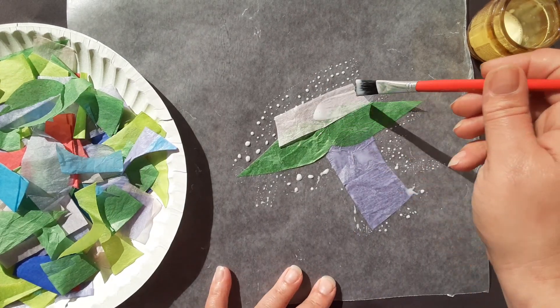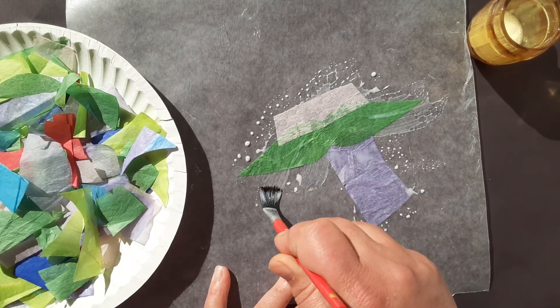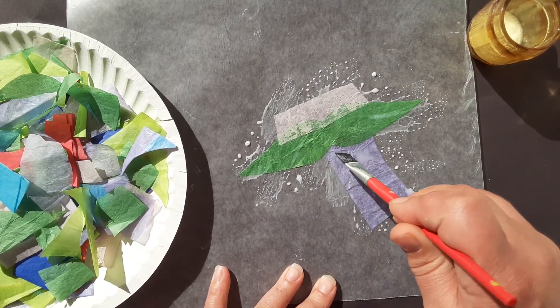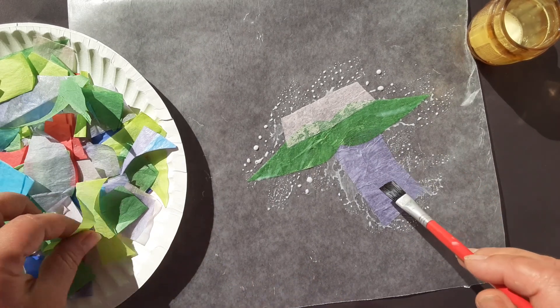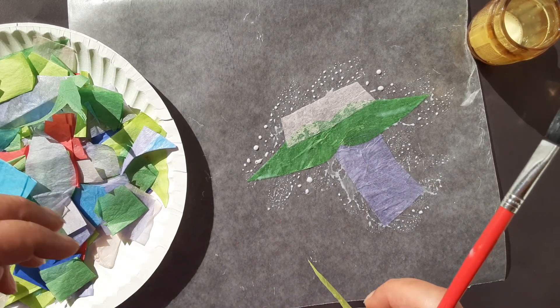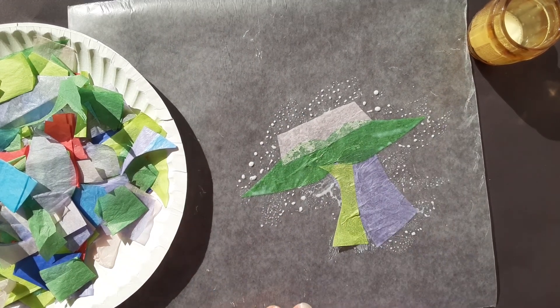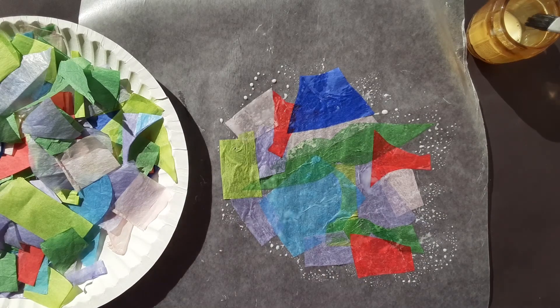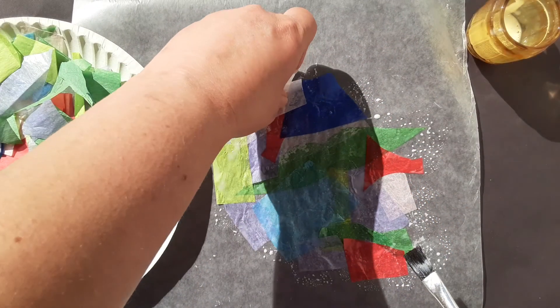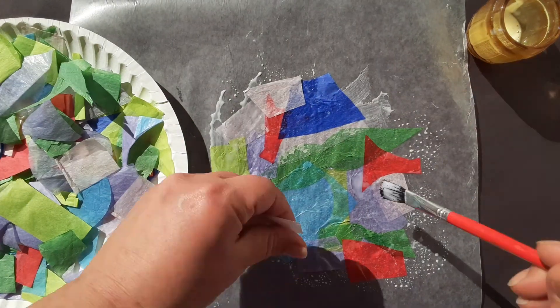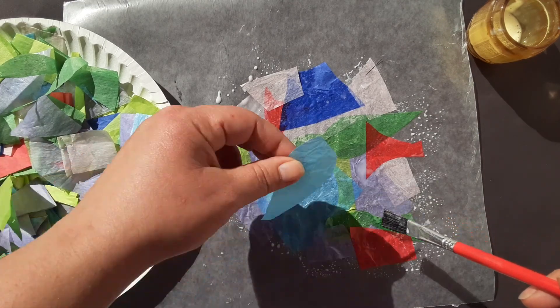Just keep putting more glue on, making sure every piece is fully covered so that it sticks to the wax paper well. Keep going until you have lots of colors and an interesting pattern. It's okay if they overlap—sometimes that will create a fun new color.